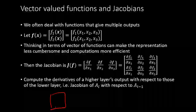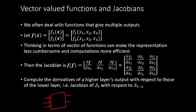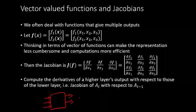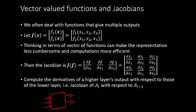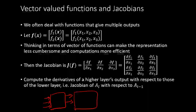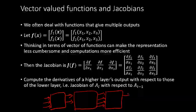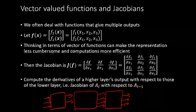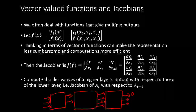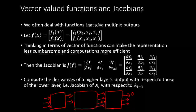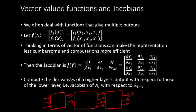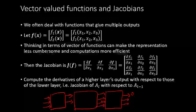You can think of a neural network as function blocks chained together. You have multiple inputs to one function and multiple outputs — for example, multiple neurons in that layer — which are chained into another function. If you take each output of one layer and take its derivative with respect to each input of the previous layer, you get a matrix of partial derivatives, which is exactly what the Jacobian is.